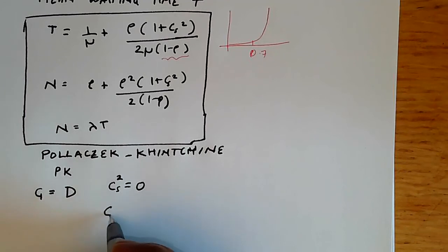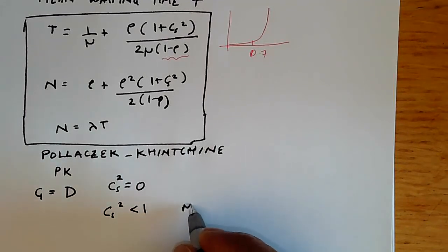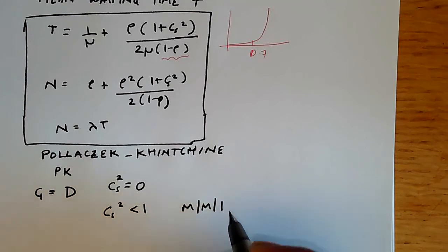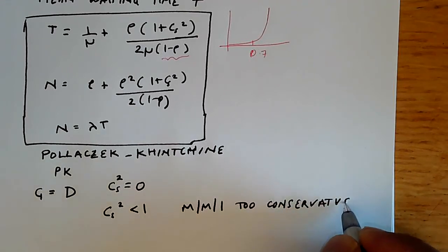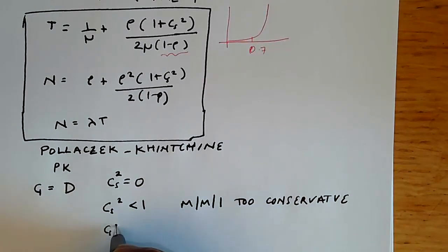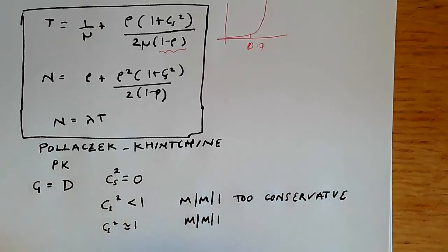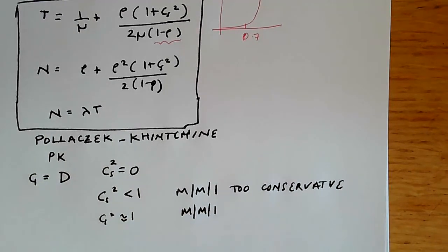When C_S squared is less than one, the M/M/1 approximation is too conservative, so we have to watch out for that. When C_S squared approximately equals one, then M/M/1 is a pretty good approximation because the C_S squared for a Poisson process equals one.